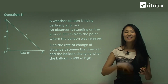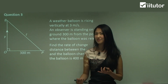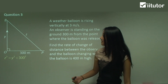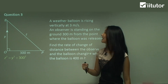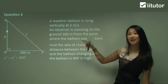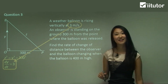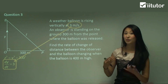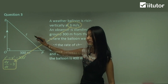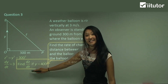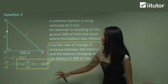Let's write out all the information. You look at the diagram and see it's a right-angled triangle, so you can make a Pythagoras equation: Z squared equals Y squared plus 300 squared. The balloon is rising at 3 metres per second, which means dy on dt equals 3. Finally, what we need to work out is the rate of change of the distance between the observer and the balloon — that's dz on dt — and it's when Y equals 400, because that's when the balloon is 400 metres high.